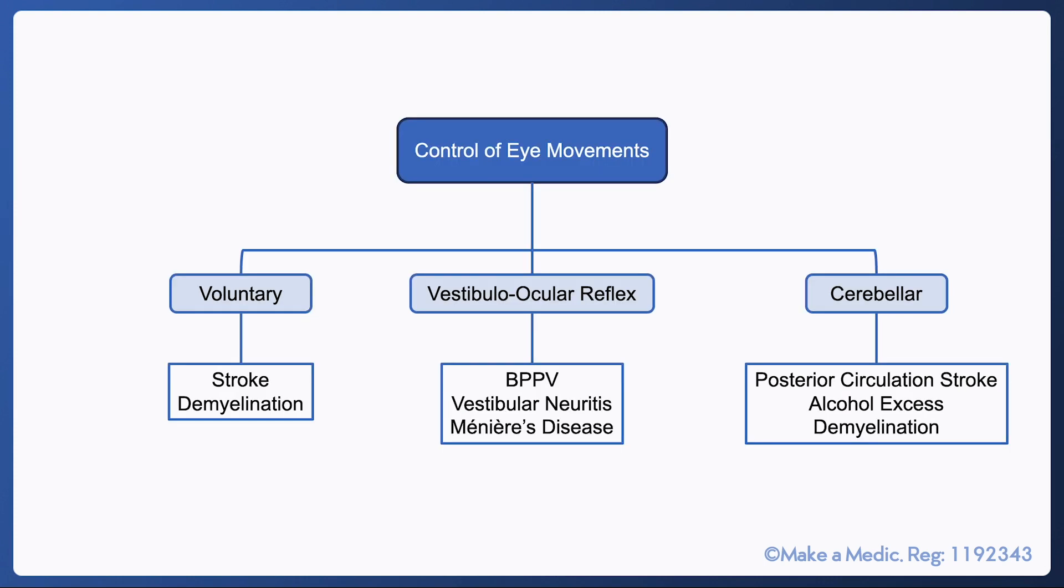If we go back to the slide regarding the different systems involved in the control of eye movement we can think about the various possible causes. If we think about the voluntary pathway a stroke affecting the frontal eye fields or demyelination of some of the important pathways such as the MLF can cause disorders of eye movements. Similarly strokes, demyelination and alcohol excess can affect cerebellar function resulting in disorders of eye movements as well. Finally abnormalities in the functioning of the vestibular apparatus as seen in BPPV, vestibular neuritis and Meniere's disease will also disrupt eye movements because it tricks the brain into thinking that the head is in motion when it is actually still. When referring to vertigo any causes related to vestibular disease are considered the peripheral causes of vertigo. On the other hand central causes are those that relate to the brain and brain stem.